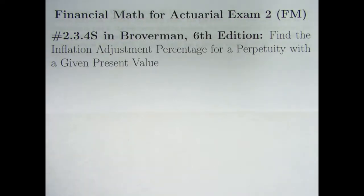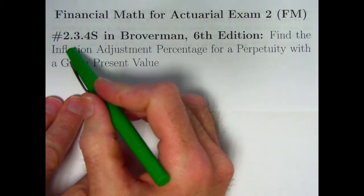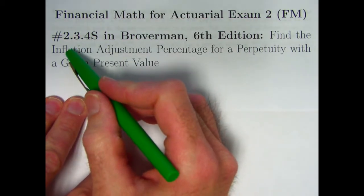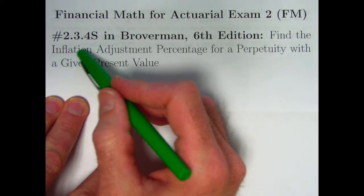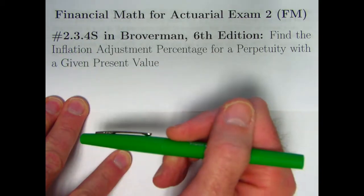In this video we're going to go back to problems in Broberman's book. Start going back to these problems. The first problem that we're going to do in section 2.3, which is about annuities with non-constant payments, this is problem 2.3.48, an old exam problem.